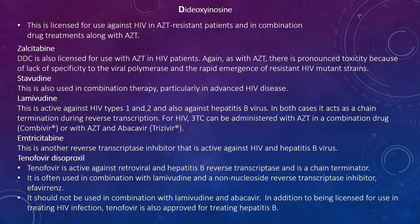Zalcitabine (ddC) is licensed for use against HIV in AZT-resistant patients and in combination with AZT. There is pronounced toxicity because of the lack of specificity to the viral polymerase and the rapid emergence of resistant HIV mutant strains. Stavudine is used in combination therapy, particularly in advanced HIV disease. Lamivudine (3TC) is used against HIV types 1 and 2 and against Hepatitis B virus — it causes chain termination during reverse transcription. For HIV, 3TC can be administered in a combination drug, Combivir, with AZT and abacavir. Emtricitabine is another reverse transcriptase inhibitor active against HIV and Hepatitis B virus, as is tenofovir.